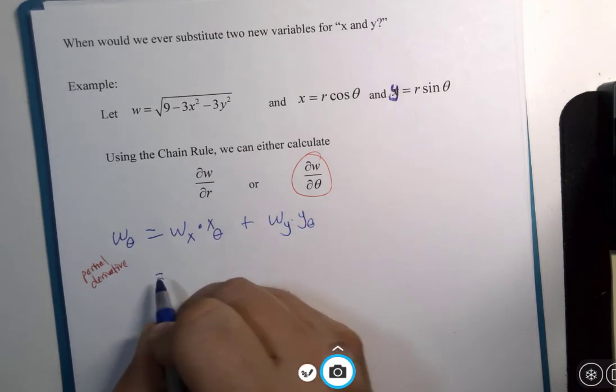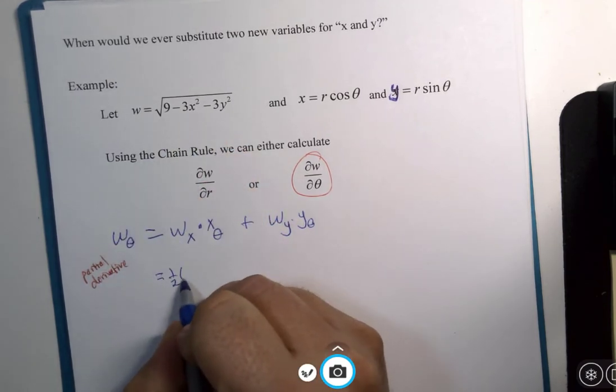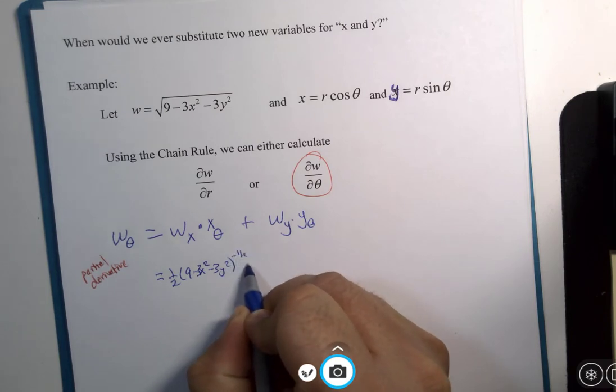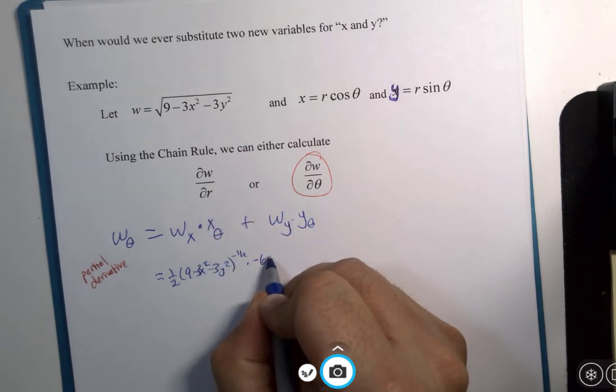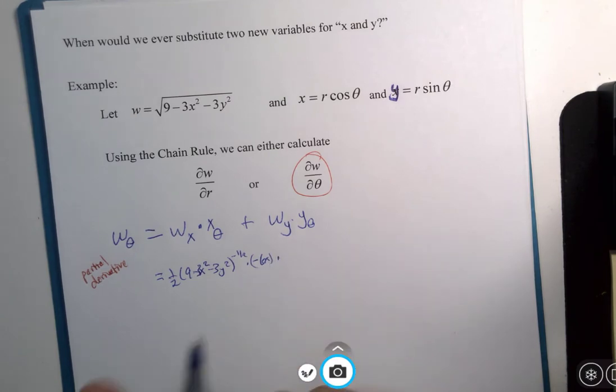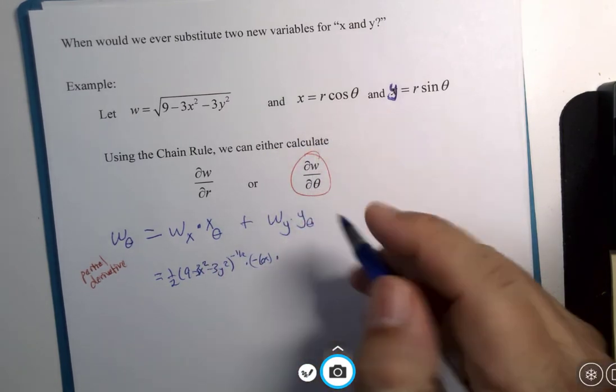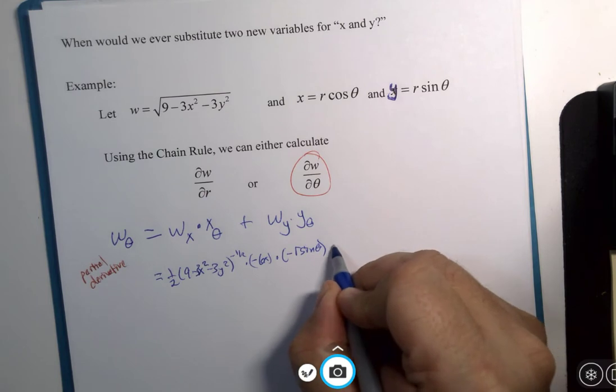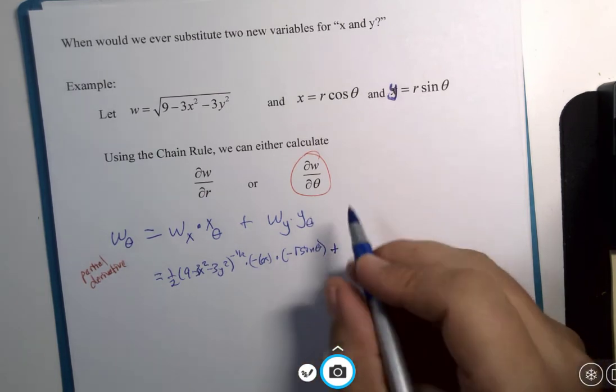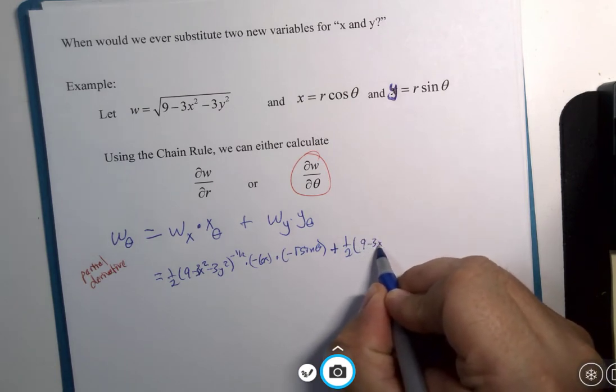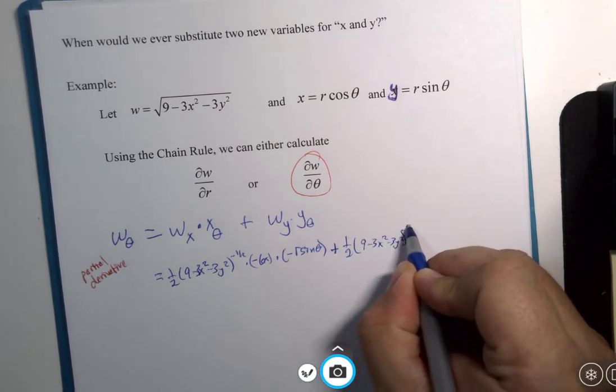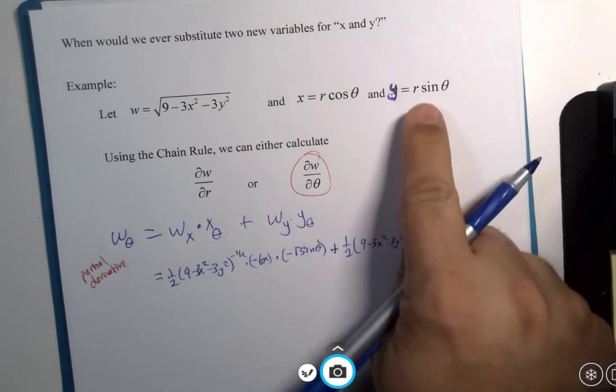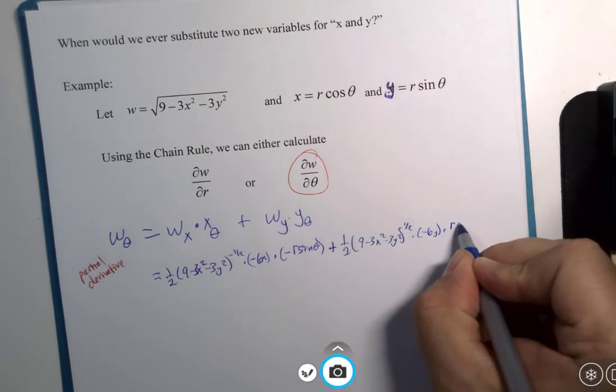Okay, what do we get here? One half, nine minus three x squared minus three y squared to the negative half power multiplied by negative six x times the theta derivative here is negative r sine of theta. Plus one half, nine minus three x squared minus three y squared to the negative half power times negative six y times the theta derivative here would be r cosine of theta.